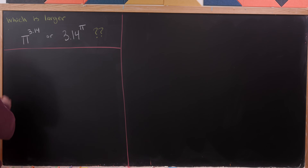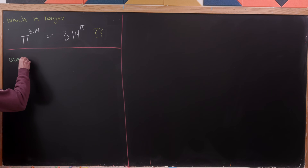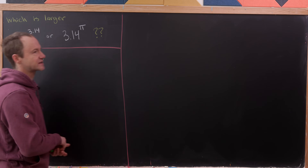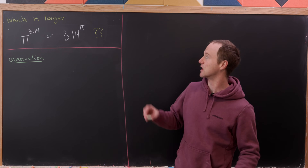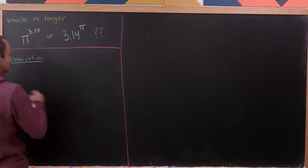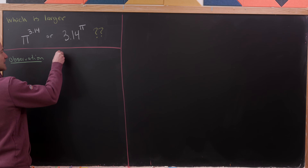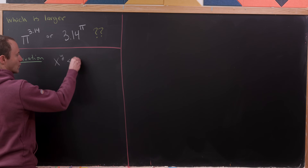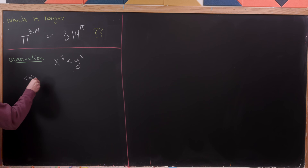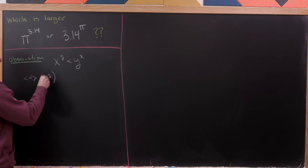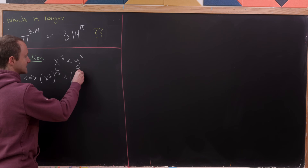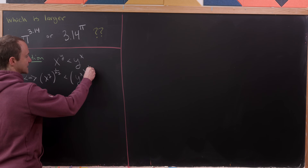Let's start with a little observation — a small calculation that will bring us towards something equivalent to the inequality we want to prove. We'll start by assuming that x to the y is less than y to the x, and observe that this is equivalent to x to the y raised to the power 1 over xy being less than y to the x raised to the power 1 over xy.